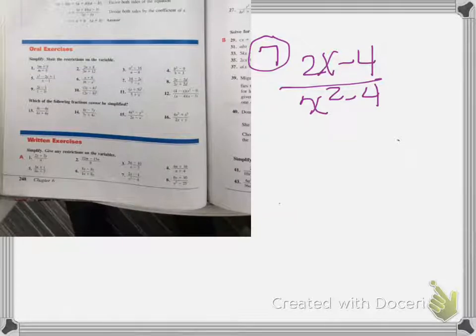We're going to start with the numerator. What can I factor out of 2x and 4? I can factor out a 2. 2x divided by 2 is x, minus 4 divided by 2 is 2.